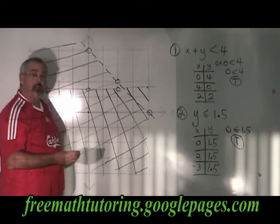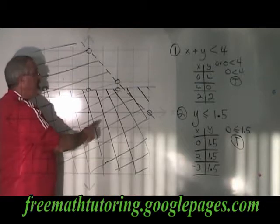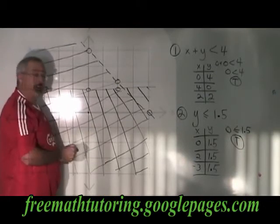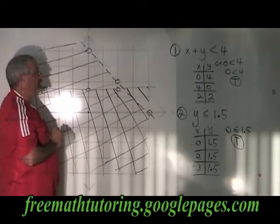The answer is the double shaded region, which takes on this checkerboard pattern when you choose your shading direction carefully. The checkerboard area is the answer for this system of inequalities.